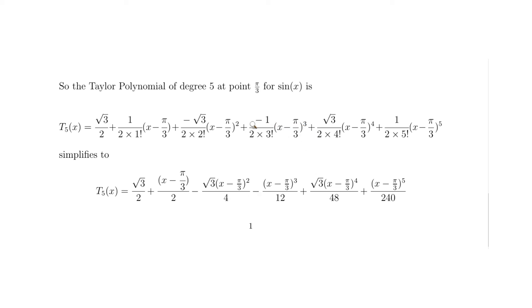For the (x - π/3)³ term, 2 times 3 factorial is 2 times 6 = 12, giving -1/12. The (x - π/3)⁴ term has 2 times 4 factorial = 2 times 24 = 48, giving √3/48. The final (x - π/3)⁵ term has 2 times 5 factorial = 2 times 120 = 240. This gives us our final answer: the degree-5 Taylor polynomial for sine of x at π/3.